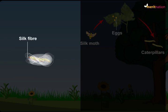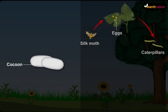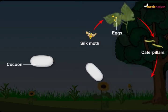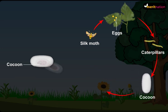Caterpillars continue to spin silk fiber till they get completely covered by them. This silk covering in which a silkworm covers itself is known as a cocoon. Further development of the silkworm takes place inside the cocoon.